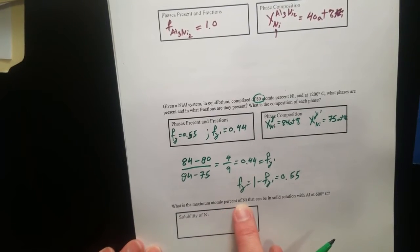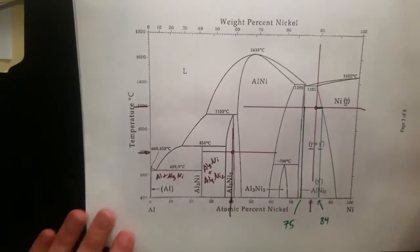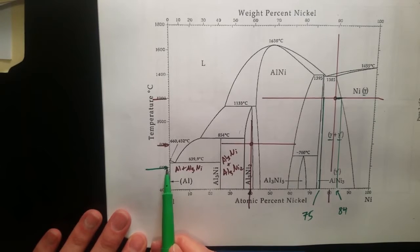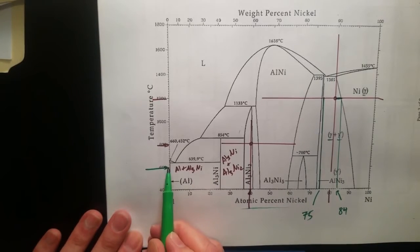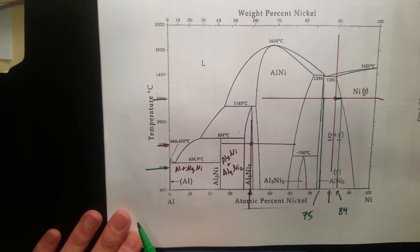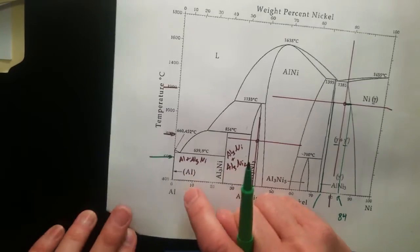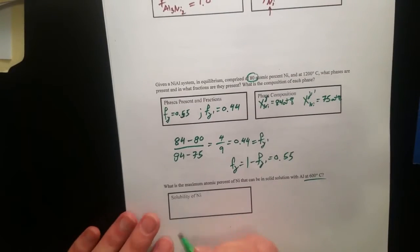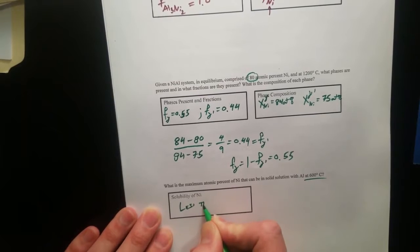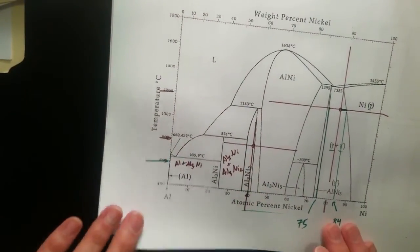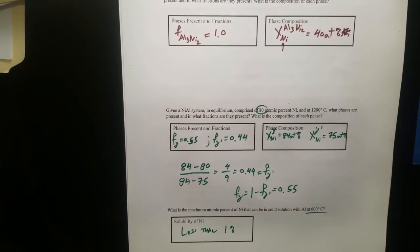What is maximum solubility of nickel in aluminum? Basically we're saying if we come over here at 600 Celsius, and I start out with 100% aluminum or 0 nickel, and I start adding nickel, at what point do I precipitate out a second phase? And that second phase is going to be AL3NI. Well, it's very small. I pretty much took any answer that is less than one percent.